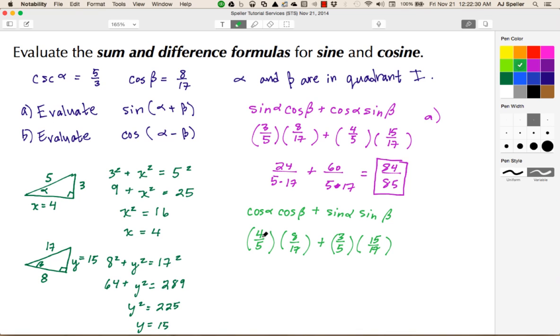First, we multiply the numerators. 4 times 8 gives 32, and I'll keep my denominator as 5 times 17. Plus, keeping the denominator 5 times 17, multiply the numerators: 3 times 15 gives 45.